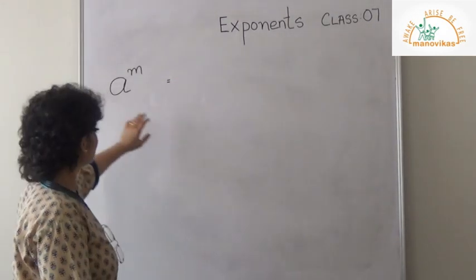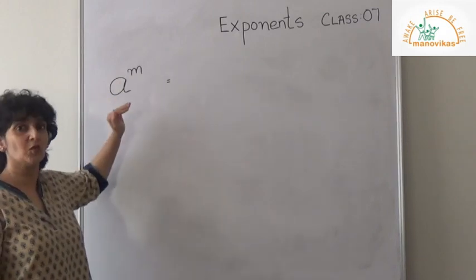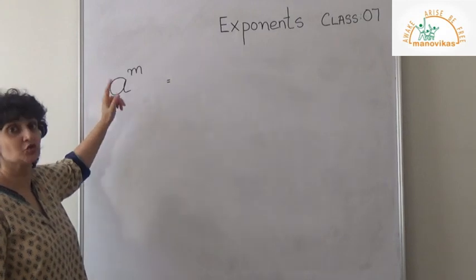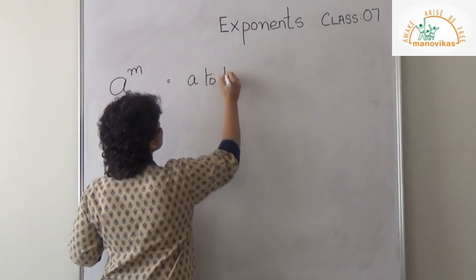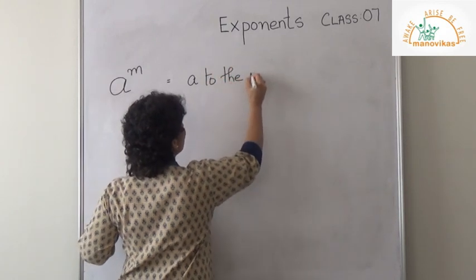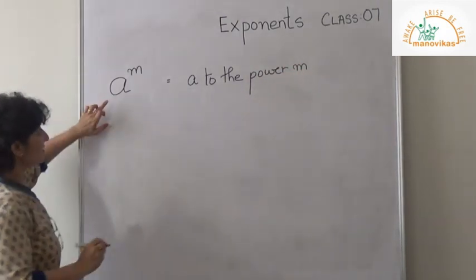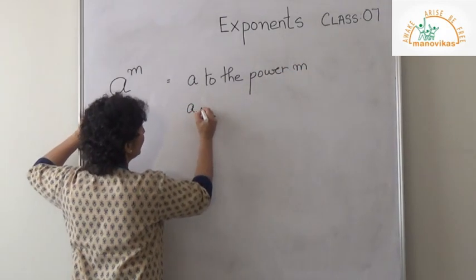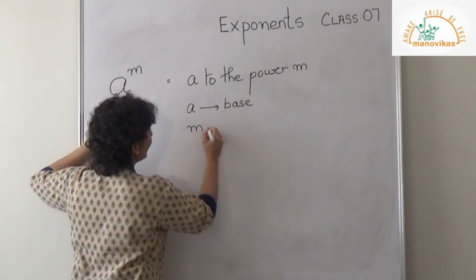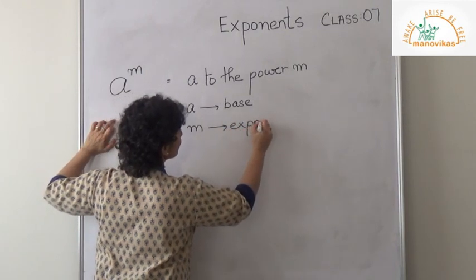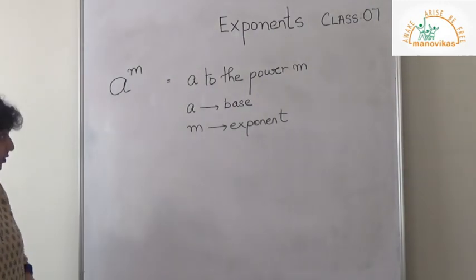You will see I have written here A and M. How do I say this? A to the power M. Where A is your base and M is your exponent.